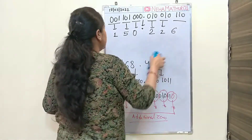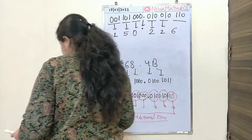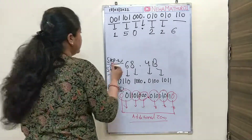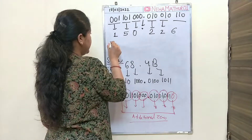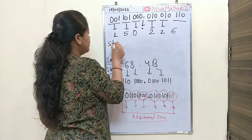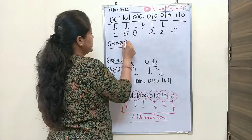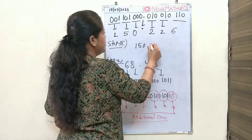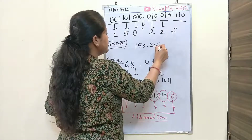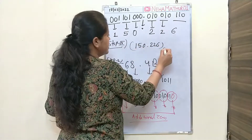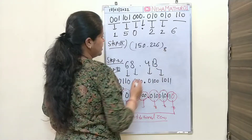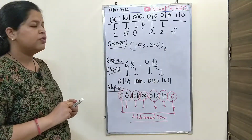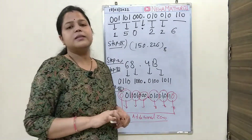Write all the digits properly by removing the spaces. Your final answer will be 150.226 having base 8. This is all about the conversion of hexadecimal number system into octal.